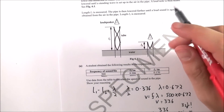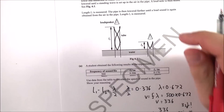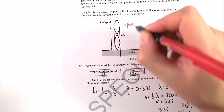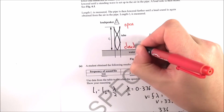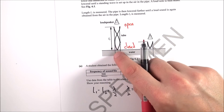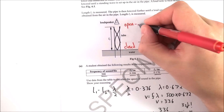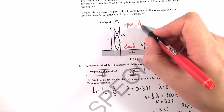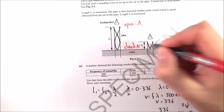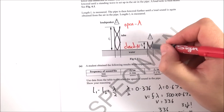Question six is about standing waves in a tube. There's an open end at the top and a closed end at the bottom, because the water effectively acts as a closed end. At the open end you have an anti-node — maximum displacement — and at the closed end you have a node.